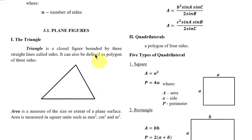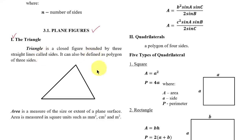For our first sub-topic, plane figures: number one is the triangle. A triangle is a closed figure bounded by three straight lines called sides; it can also be defined as a polygon of three sides. We already discussed triangles in our previous module on trigonometry.